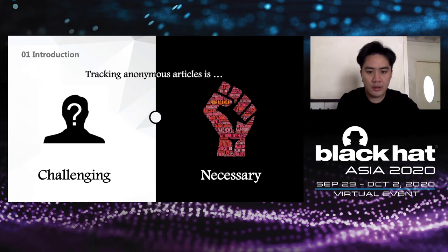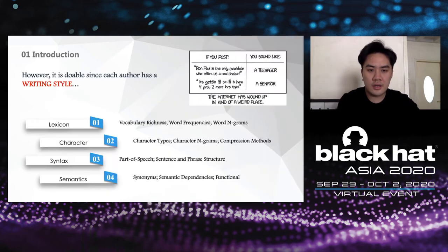However, most fake news and articles are posted anonymously, and it lacks valid information to identify the author. So tracking anonymous articles is also a challenging problem. Fortunately, it is not impossible. Different people have different writing styles, so we are able to identify some writers by their distinct habits.